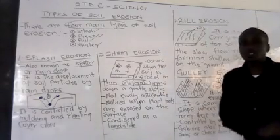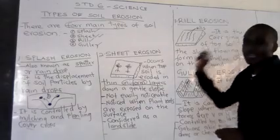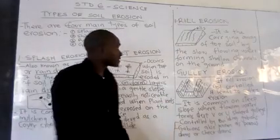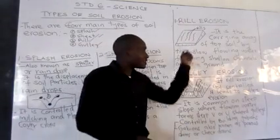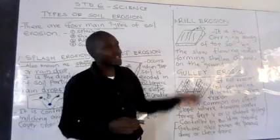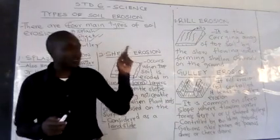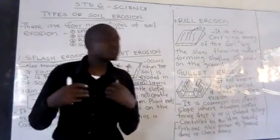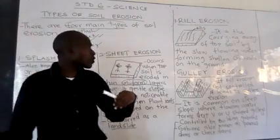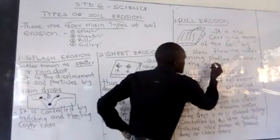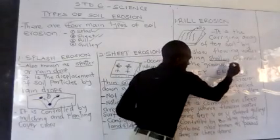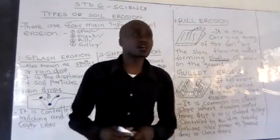The third type is rill erosion. You can see the rills here — these are shallow channels on the ground. Rill erosion is the carrying away of topsoil by slow-flowing water, forming shallow channels on the ground.